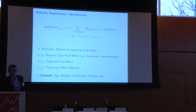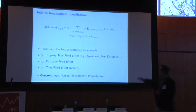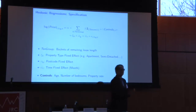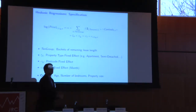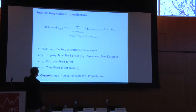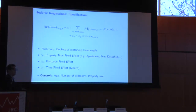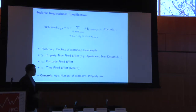The specification is a fairly simple hedonic regression where we regress the log transaction price on interacted fixed effects of postcode — a very narrowly defined geographic unit in the UK — by time and by property type. So we're comparing flats sold in the same postcode at the same point in time, controlling for observable characteristics from Rightmove: age, number of bedrooms, bathrooms, and property size. We include buckets of remaining lease lengths to estimate the percentage price discount for an otherwise similar property relative to the freehold.